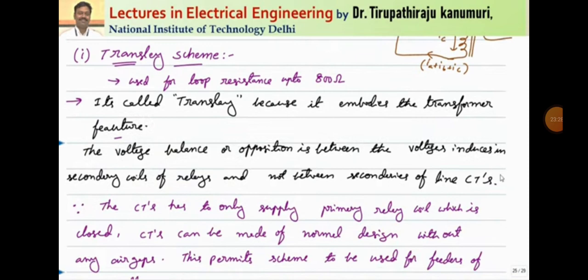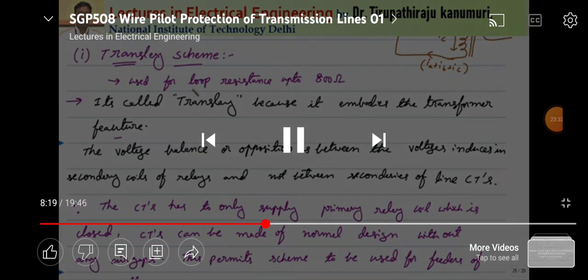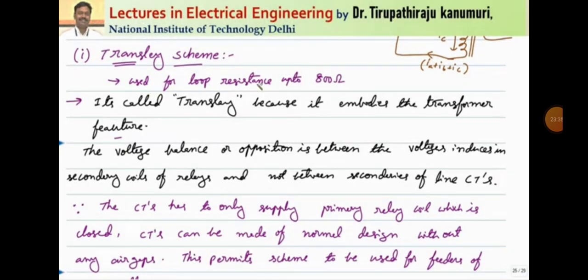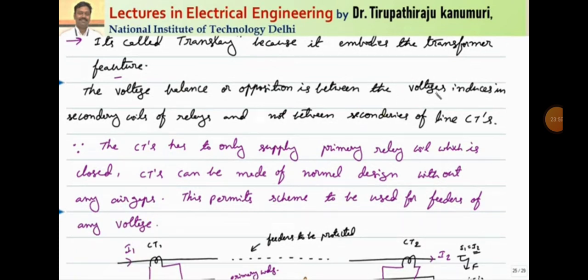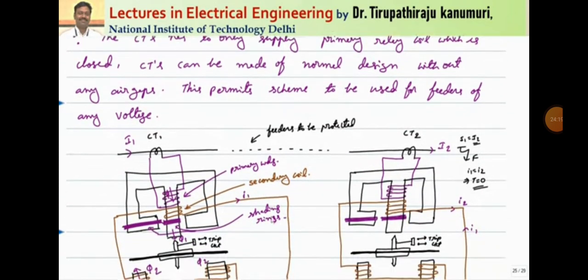Today we are going to discuss the translay scheme; the remaining scheme will be discussed in the next lecture. The translay scheme is used for pilot wire loop resistance up to 800 ohms. It is called translay protection because it employs the transformer feature. The voltage balance or opposition is between the voltages induced in the secondary coils of the relays and not between the secondaries of the line CTs. The CTs are never open-circuited. The CT currents passing through the primary winding are always unaffected, so normal CTs can be used for this purpose.